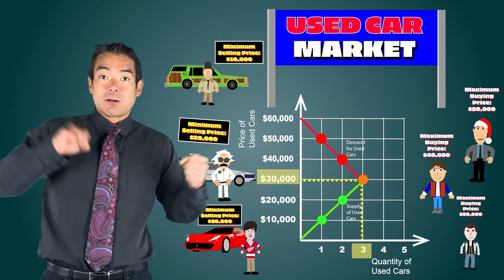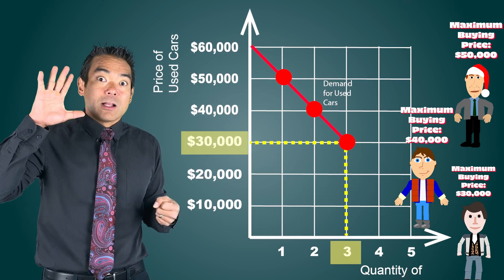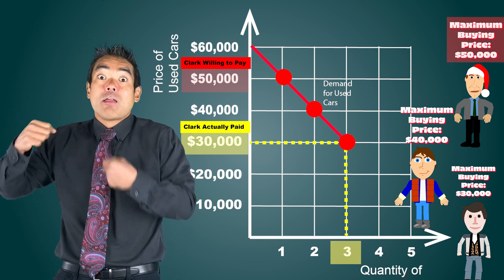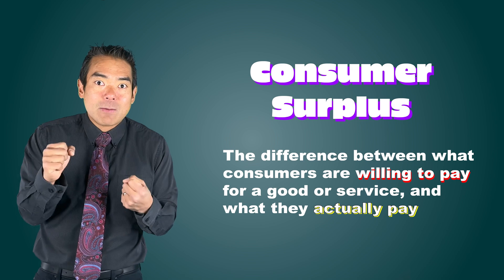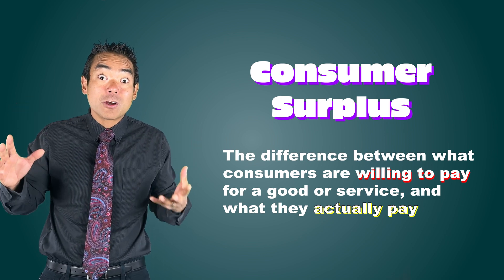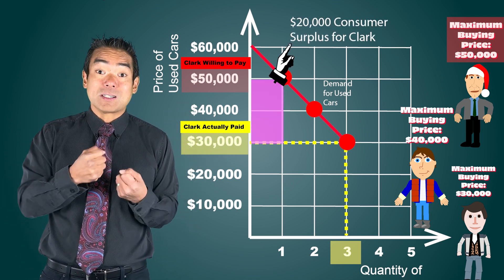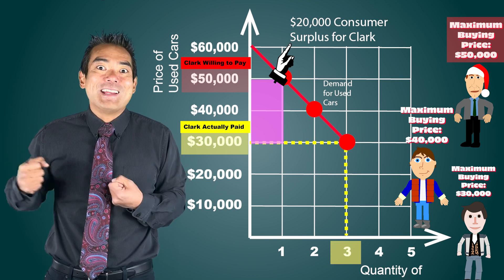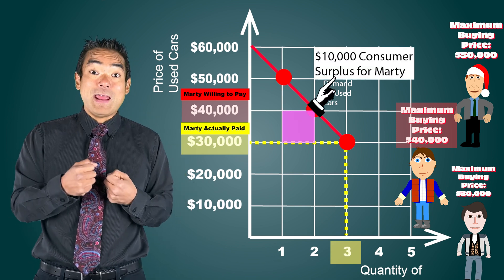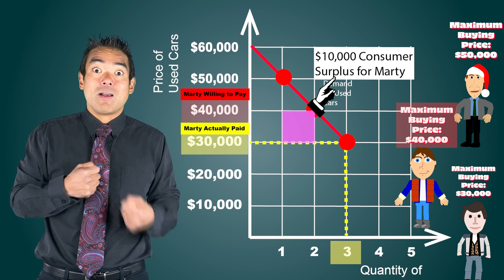In this market, the market price is $30,000 and three cars are bought and sold at $30,000. But Clark was willing to pay $50,000 and only paid $30,000. This difference between the price that a consumer is willing to pay for a product and what they actually pay is what we call consumer surplus. Clark gets $20,000 of consumer surplus. Similarly, Marty gains $10,000 of consumer surplus — he was willing to pay $40,000 and only paid $30,000.